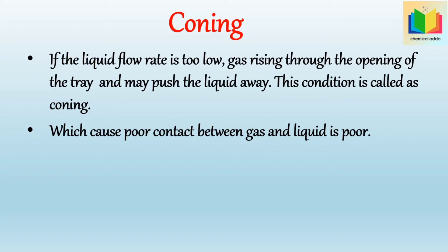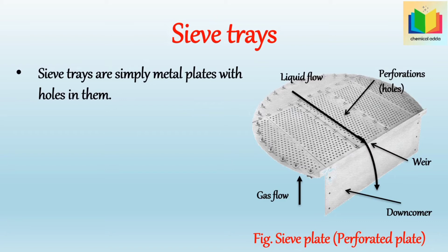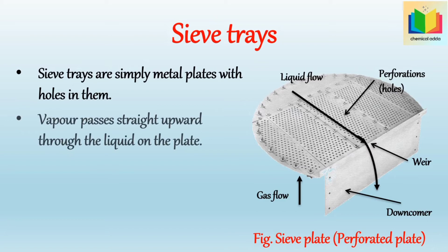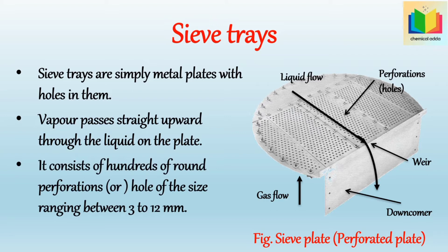Explain sieve trays. Sieve trays are simply metal plates with holes in them. Vapor passes straight upward through the liquid on the plate. It consists of hundreds of round perforations or holes of size ranging between 3 to 12 millimeters. The gas flow through the perforations prevents downflow of the liquid, but at low gas rates, weeping is a severe problem which in turn reduces stage efficiency.